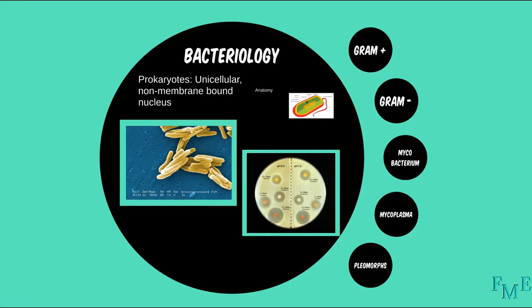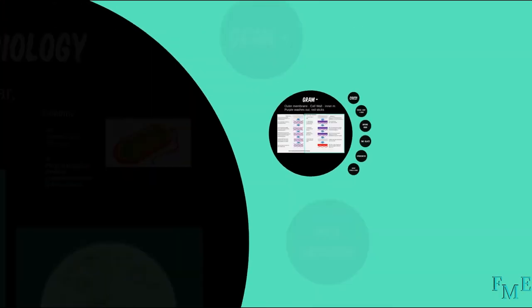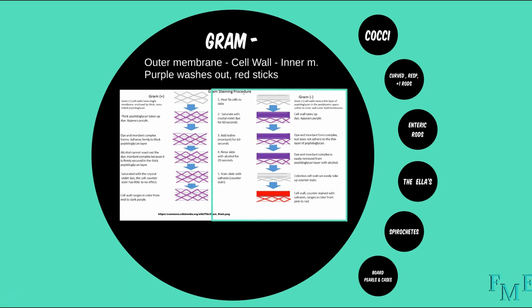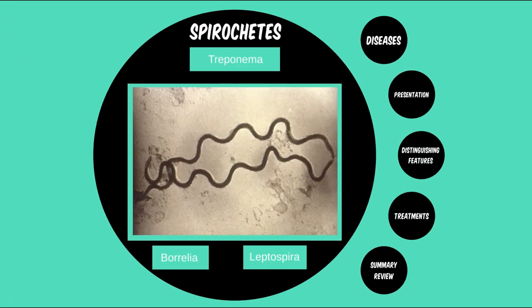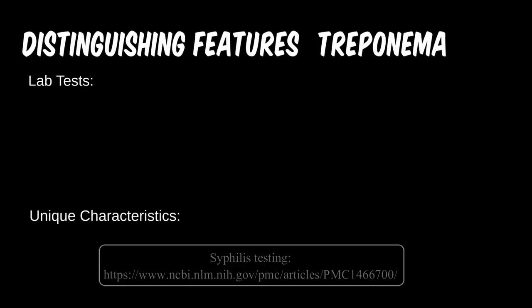Now that you have a better feel for the microbes in this module, it's time to take a look at some of the specific tests and characteristics for each. Treponema is actually the first microbe we'll cover, but not the last, to use a two-tiered testing method. We will have an interesting graphic to represent this for Lyme disease, which also uses two-tiered testing. The two tiers include a screening and a confirmatory test, which we'll also revisit in virology.